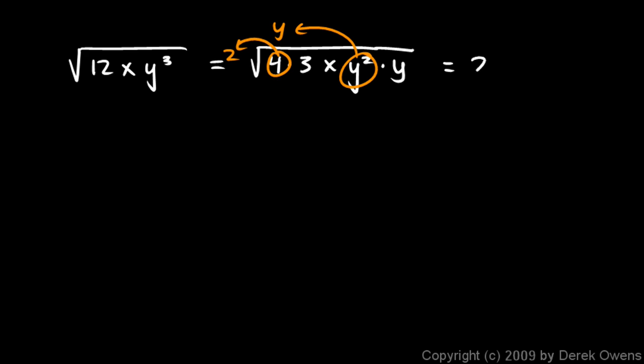And instead of having the square root of y², we have a y. So we have a 2y out front. And what's left underneath is the 3 and the x and the y. So we still have a radical with 3xy. So 2y times the square root of 3xy, that's the answer.